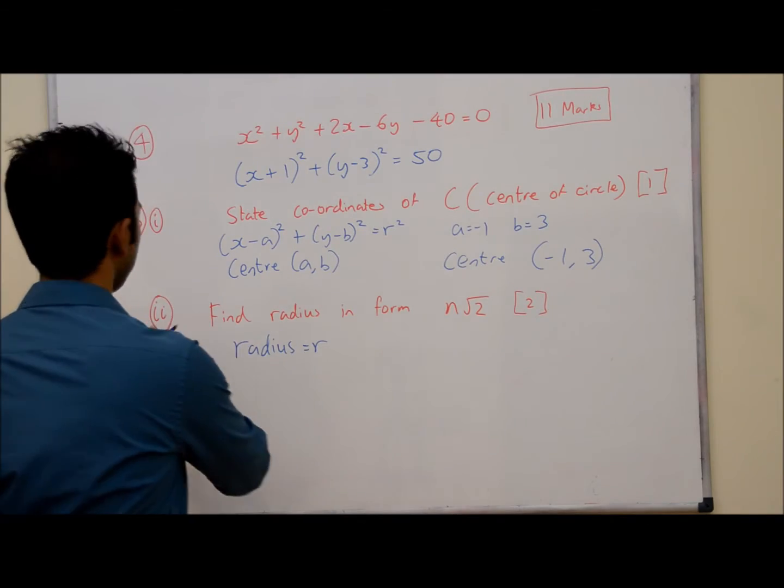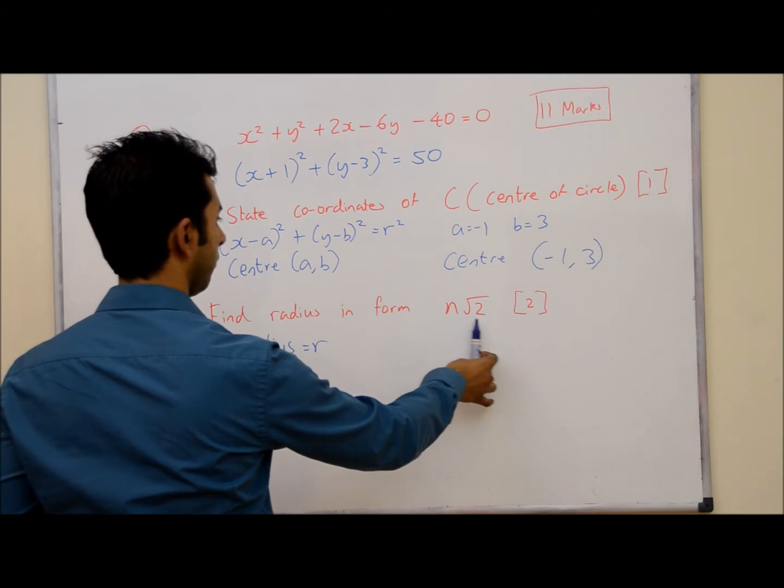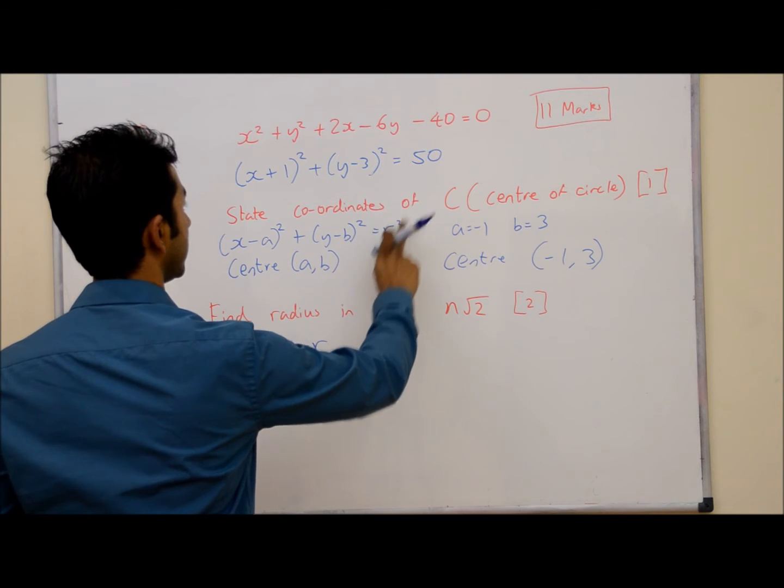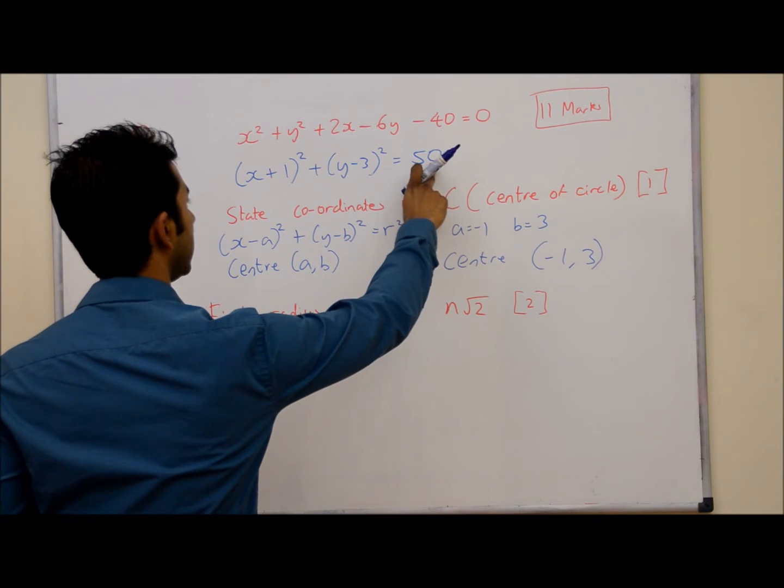So now let's look at part 2. Find the radius in the form n√2. We know the radius is equal to r². And in our question, r² is 50.